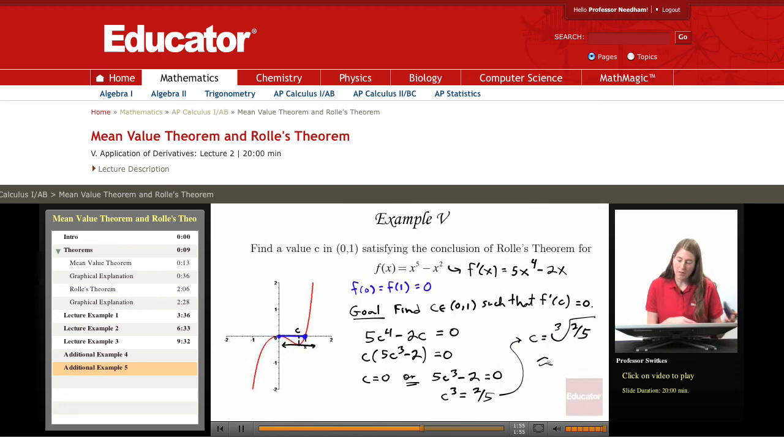That's clearly in 0 to 1, but let's get a decimal approximation for it. c equals cube root of 2 fifths is approximately 0.737.